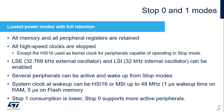STM32WL5 devices feature two stop modes with full retention — Stop 0 and Stop 1 — which are the lowest power modes with full retention and fast wake-up time to run mode at maximum 48 MHz. The contents of SRAMs and all peripheral registers are preserved. All high-speed clocks are stopped, except those used as kernel clocks for peripherals capable of operating in stop modes. The 32.768 kHz external oscillator and 32 kHz internal oscillator can be enabled. System clock on wake-up can be the internal high-speed and multi-speed oscillators up to 48 MHz, with only a 1 microsecond wake-up time from SRAM or 5 microseconds from flash memory. Stop 1 consumption is lower than Stop 0, but supports fewer active wake-up peripherals.